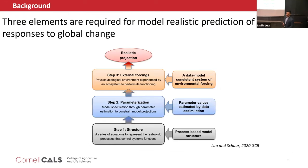Where are these uncertainties coming from? There could be three sources of uncertainty: first, structure; second, parameterization; and third, external forcing. I am fortunate enough to address all three uncertainties to reduce uncertainty in my thesis, which I will discuss one by one.